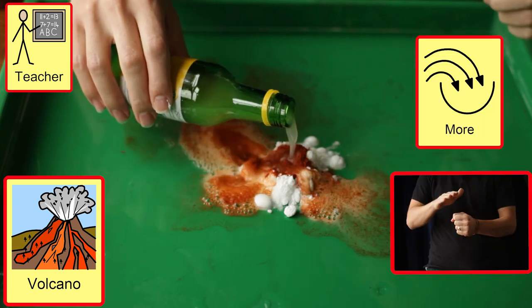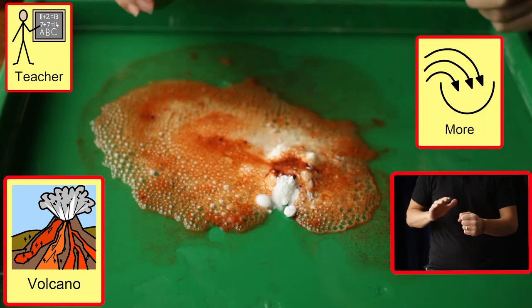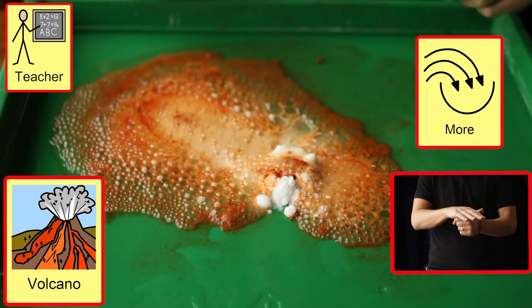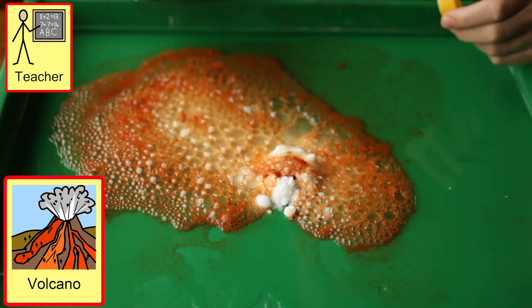By maintaining control of the vinegar or lemon juice, we can wait or prompt the student to ask for more, using eye gaze, reaching, gesture or language.